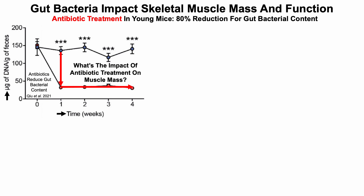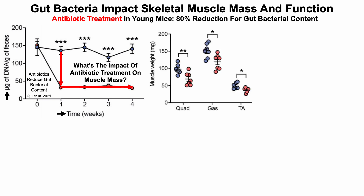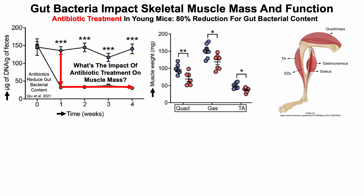So what's the impact of antibiotic treatment on muscle mass? We can see that data here. We've got muscle weight on the y-axis plotted against three different muscles: the quadriceps (quad), gastrocnemius (gas), and tibialis anterior (TA).